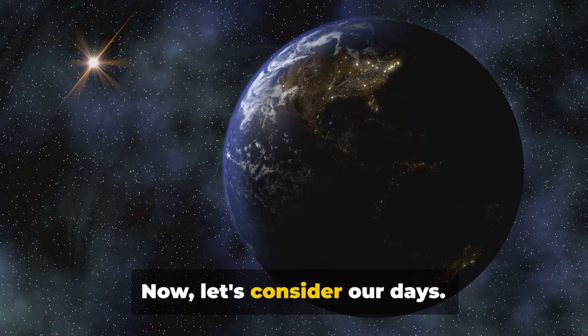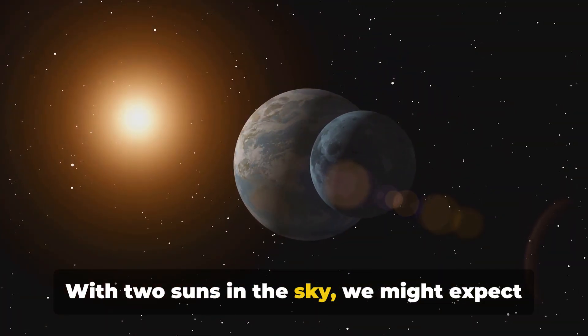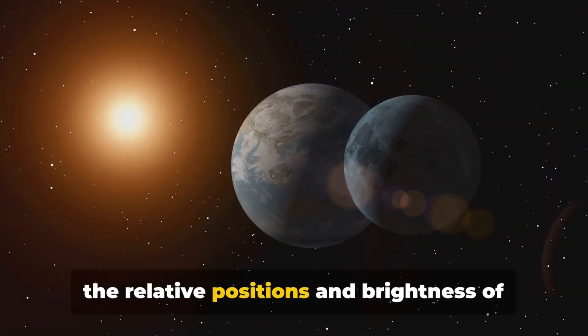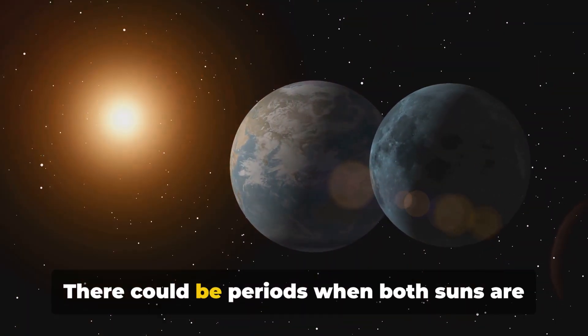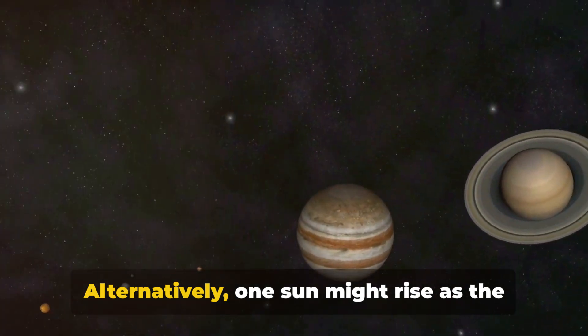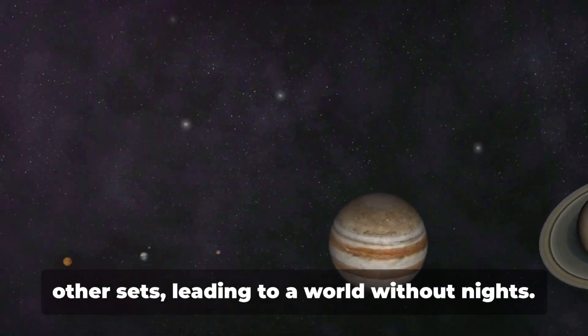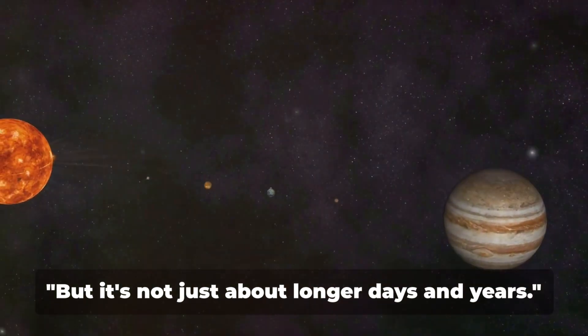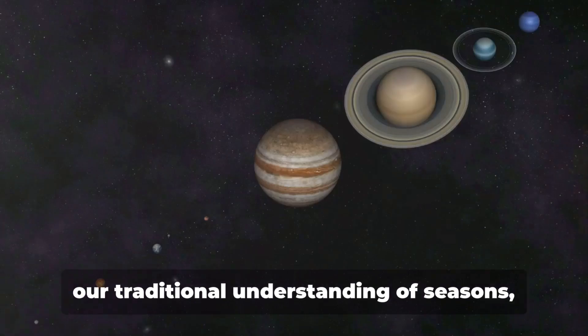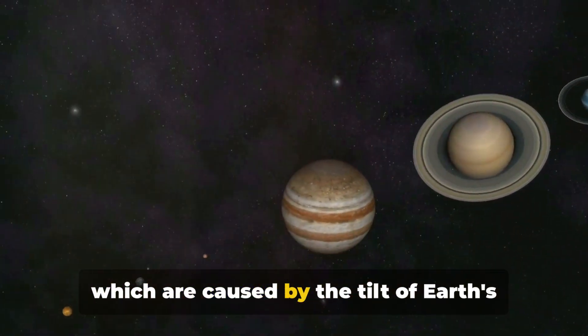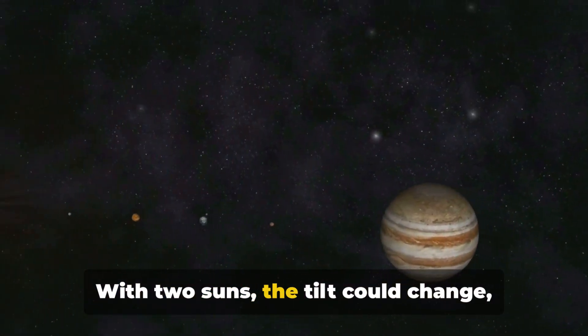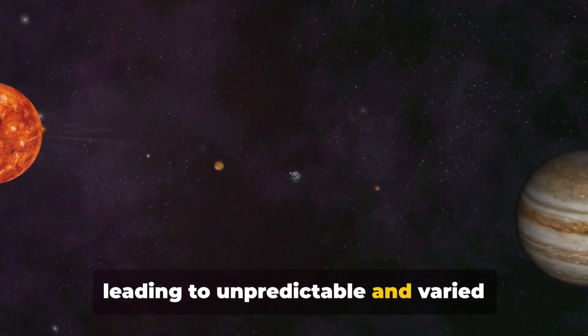Now, let's consider our days. With two suns in the sky, we might expect longer periods of daylight. The specifics, of course, would depend on the relative positions and brightness of our twin suns. There could be periods when both suns are visible, bathing the Earth in double the daylight. Alternatively, one sun might rise as the other sets, leading to a world without nights. But it's not just about longer days and years. The presence of two suns would disrupt our traditional understanding of seasons, which are caused by the tilt of Earth's axis as it orbits the sun. With two suns, the tilt could change, leading to unpredictable and varied seasonal patterns.